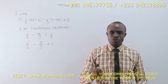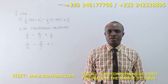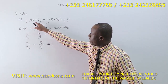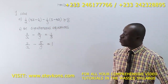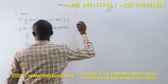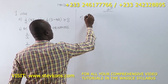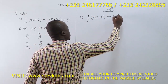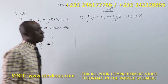Now we are on Nov/Dec 2018. I'm solving everything in that question paper for you. The first question says: solve 1/2 times (4x minus 6) minus 1/3 times (5 minus 4x) greater than or equal to 8.